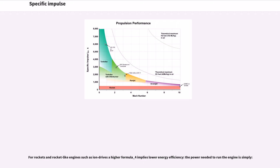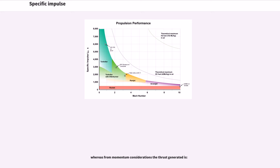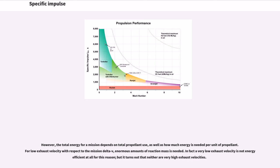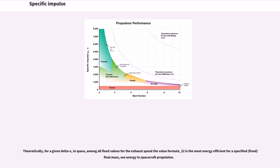For rockets and rocket-like engines such as ion drives, a higher specific impulse implies lower energy efficiency. The power needed to run the engine is proportional to the square of the actual jet velocity, while thrust is proportional to velocity, so power per unit thrust — and thus specific power requirements — increases with exhaust velocity, causing less energy efficiency per unit thrust. However, total energy also depends on total propellant use. For low exhaust velocity, enormous amounts of reaction mass are needed, making it energy inefficient. Very high exhaust velocities are also inefficient. Theoretically, for a given delta-V in space, the exhaust speed equal to approximately 0.6278 times delta-V is the most energy efficient for a specified final mass.